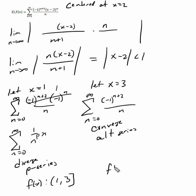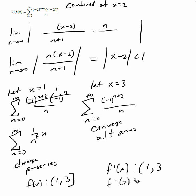So for f prime of x, the one remains open because of the parentheses rule. We don't know yet if three is closed or open. For f double prime, we also have one to three but don't know the bracket types. For the integral of f of x dx, three will remain in the bracket, but we need to test x equals one.